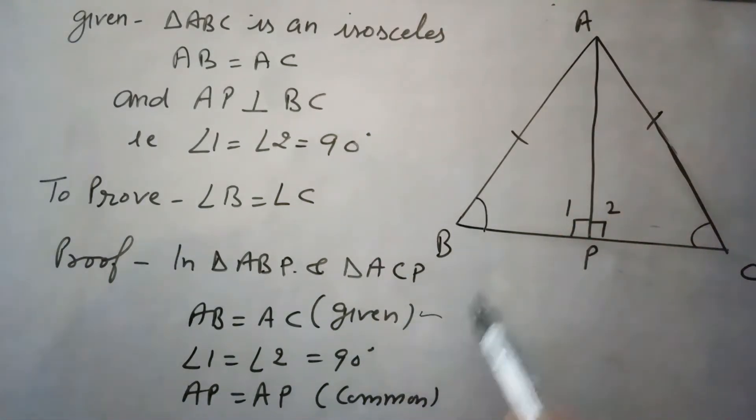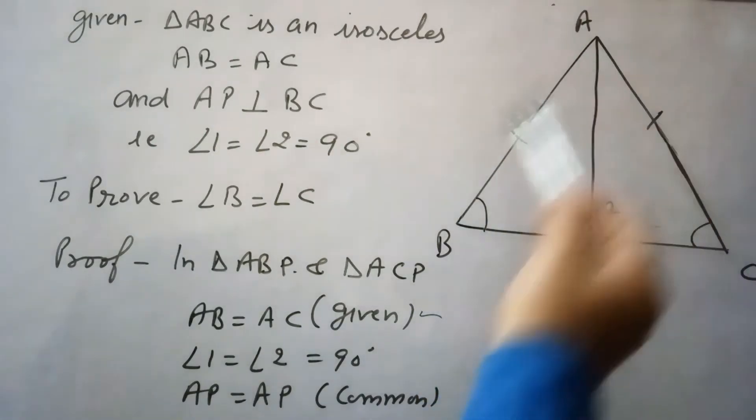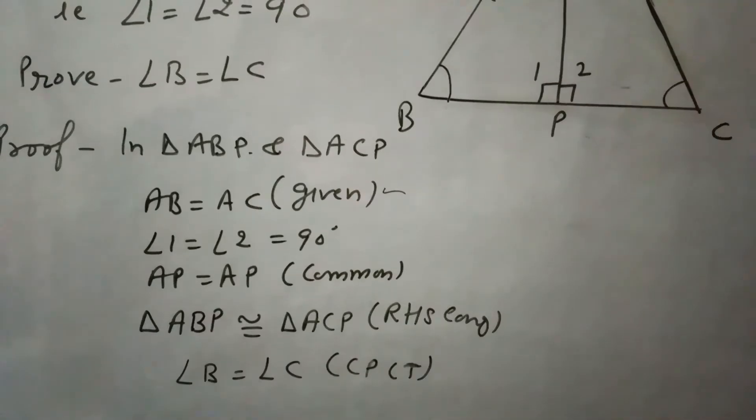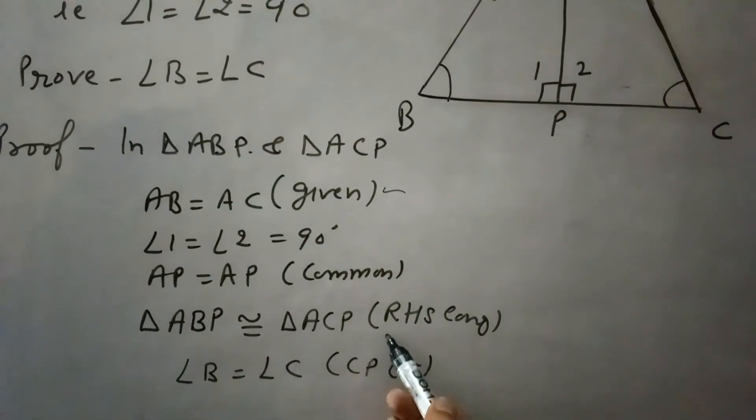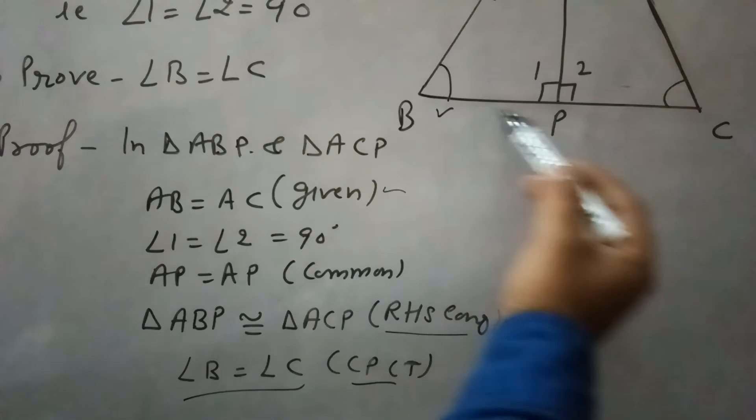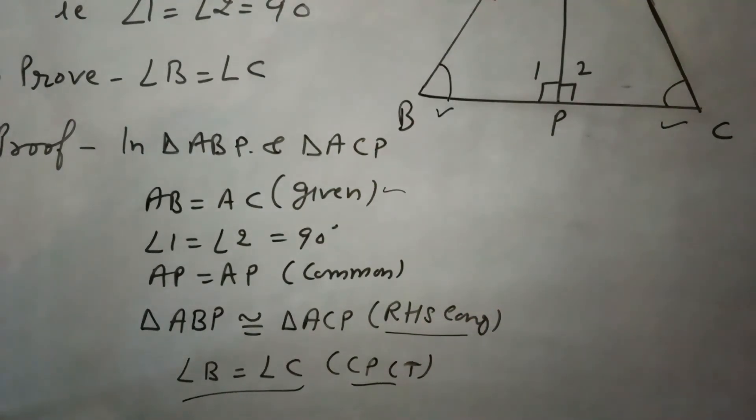So by these three conditions, these two triangles ABP and ACP are congruent to each other by RHS congruency. Both triangles are congruent by RHS congruency, and then by CPCT, angle B will be equal to angle C.